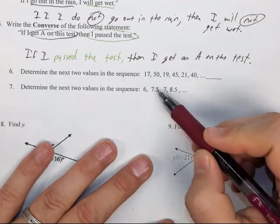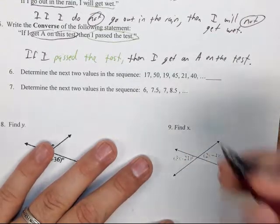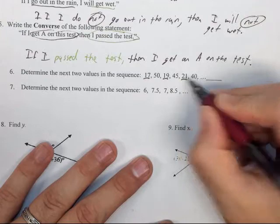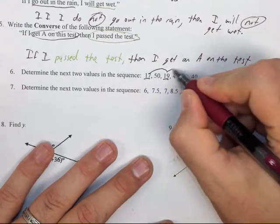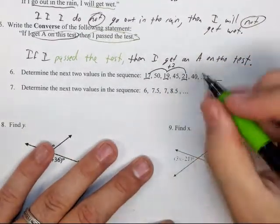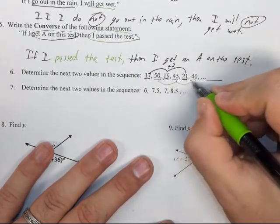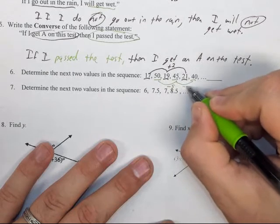Here I've got 17 and then 19 and then 21. That appears to be that as I go from here I'm adding two. Then across the bottom I've got 50 and then 45 and 40, which means that I am subtracting five on both of those.